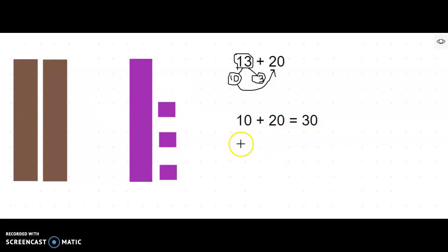Now I need to take care of my ones. My next number sentence is going to be 30 plus 3. What is 30 plus 3? That's right, 30 plus 3 equals 33. So I've added my tens together and then I've included my ones. So what's 13 plus 20? That's right, 13 plus 20 equals 33.